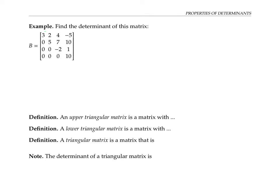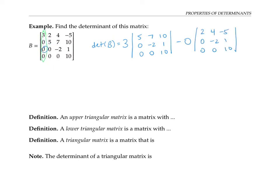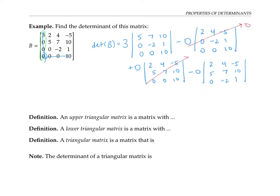Expanding along the first column, the determinant of B is three times the determinant of this three by three sub-matrix, minus zero times the next, plus zero times another, minus zero times the last. Since zero times anything is zero, those last three terms are all just zero.